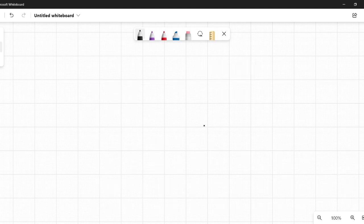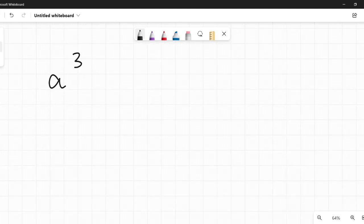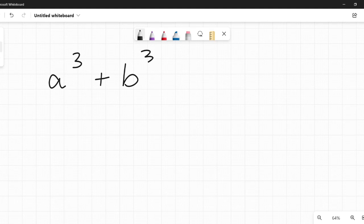They really want you just to memorize a pattern and then recognize when this pattern can be used. And here is the pattern. The first one is the sum of cubes, a cubed plus b cubed. The a and b here can represent any variable, number, or a number and a variable together.